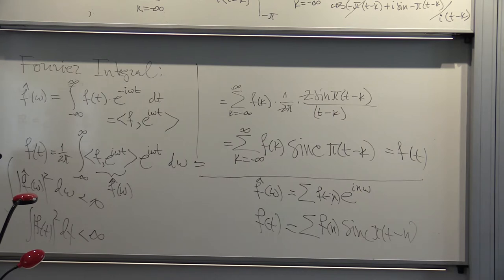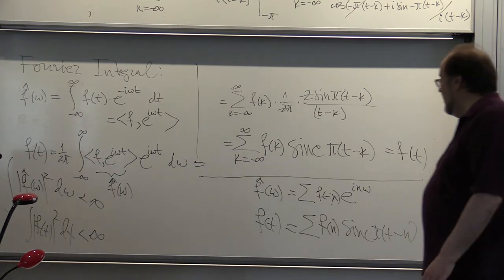is equal to 0 if m not equal to n, and equal to 1 if m is equal to n. You get an orthonormal system, so even this formula itself